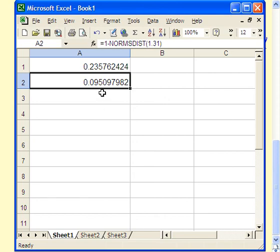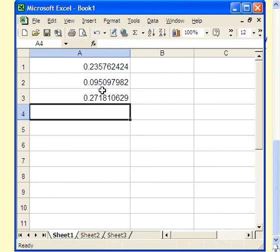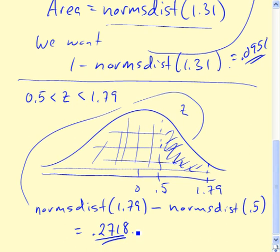It's NORMSDIST of 1.79 minus NORMSDIST of 0.5. And it's a little over 27%. 2, 7, 1, 8. All of the problems involving the normal distribution are going to ultimately distill down into one of these three cases. You need the area to the left of something, to the right of something, or in between two values. And this shows exactly how you would go about finding any of those.